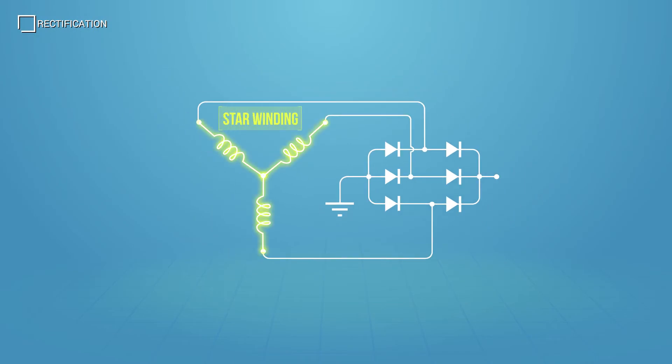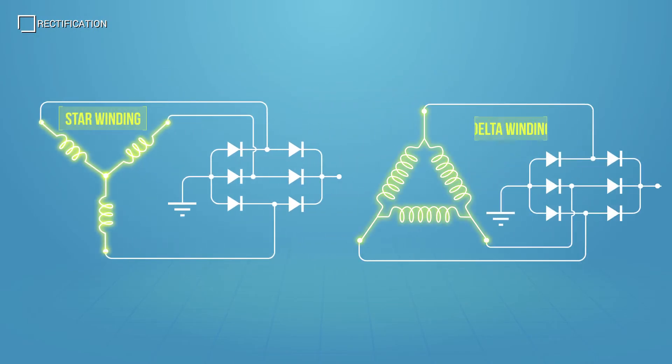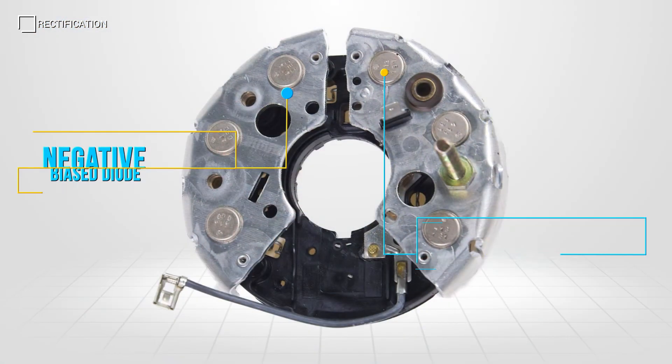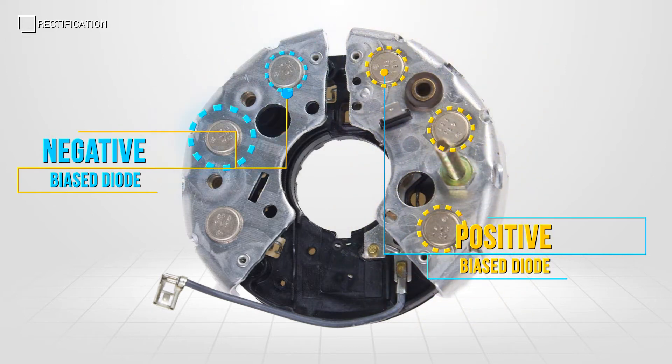Each end of the alternator's star, or Y winding, or each junction of a delta winding, is attached to the diode bridge. The bridge in conventional alternators is made up of three positive and three negative biased diodes, so each phase winding uses one pair.